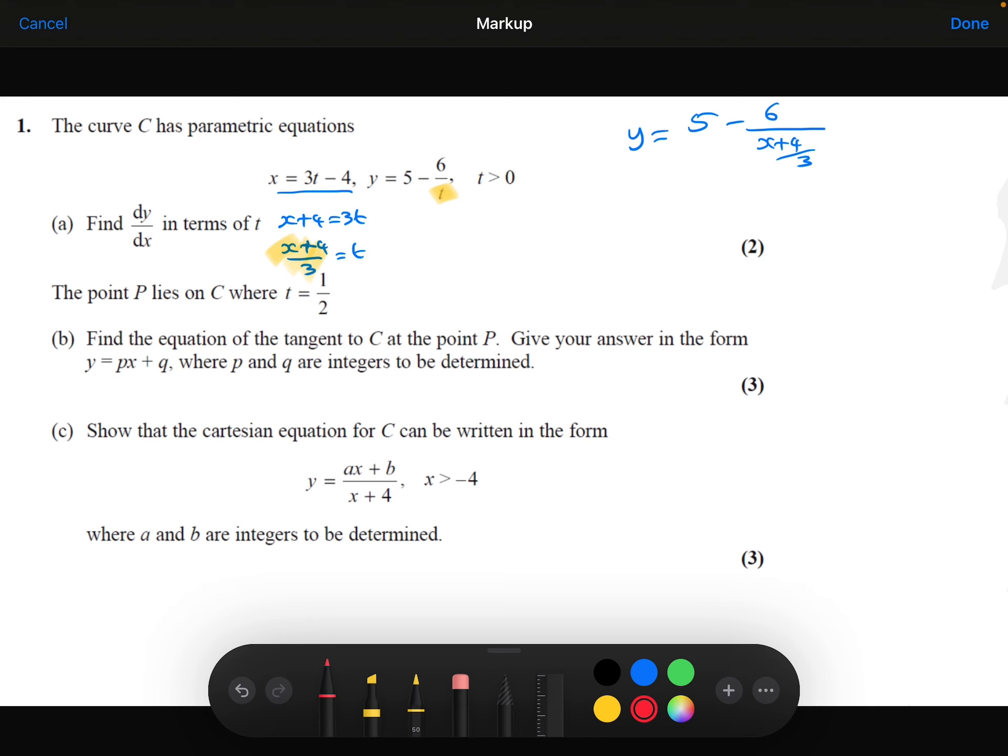Now to simplify this, I don't like this awkward fraction within a fraction here, so let's deal with that first. Let's times the top and the bottom by 3 to cancel this out. So that's going to give 18 over x plus 4.